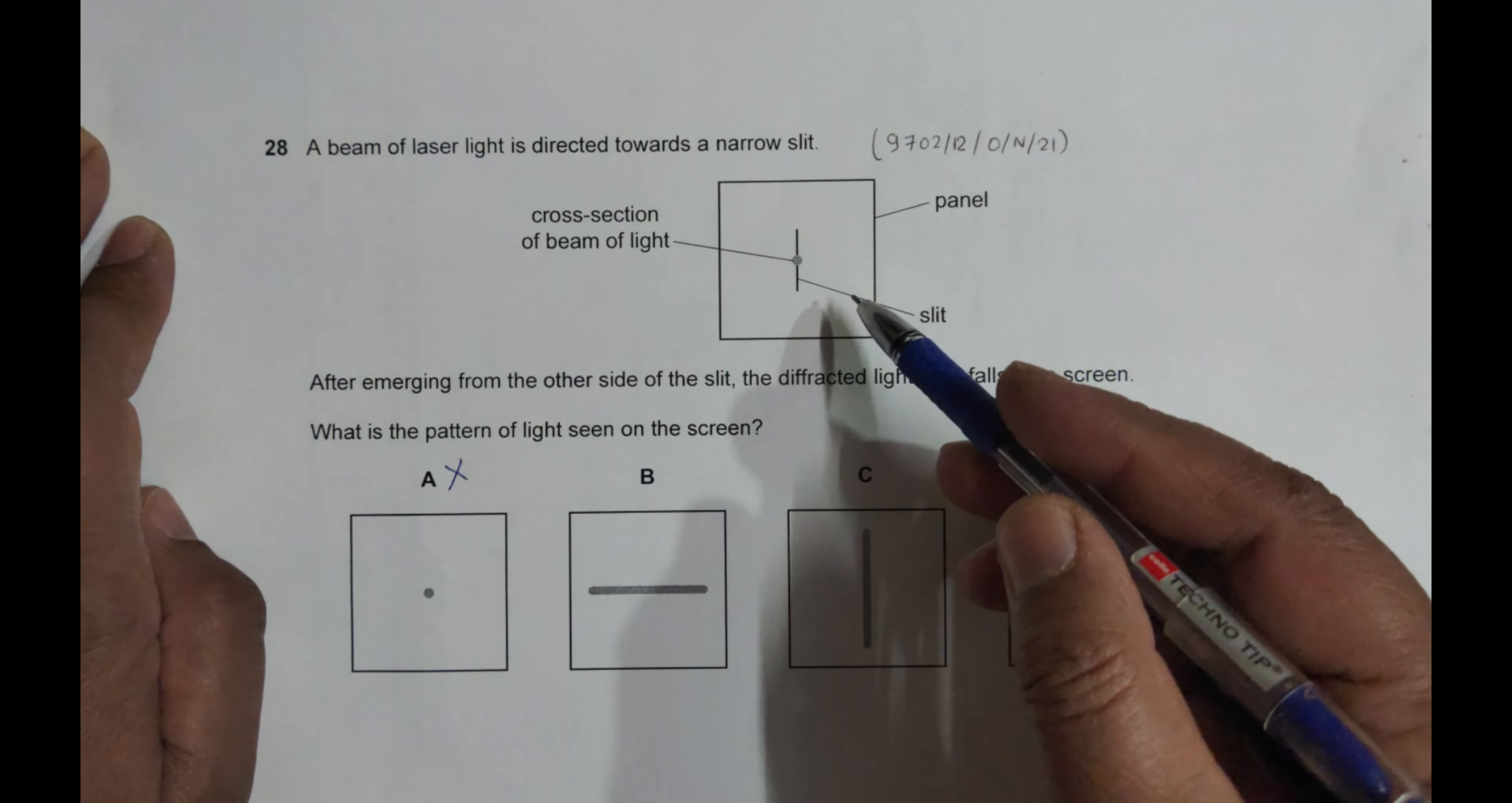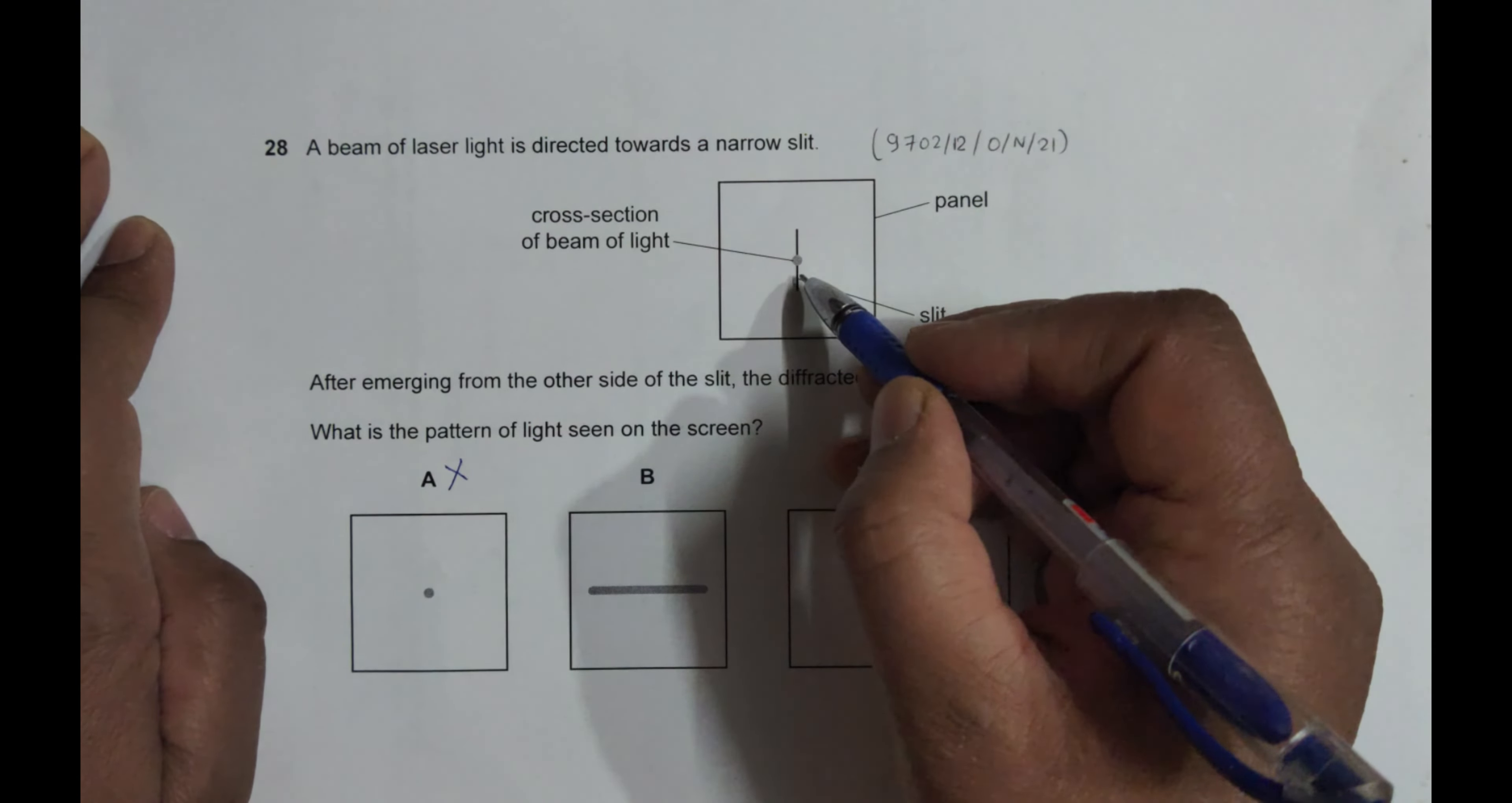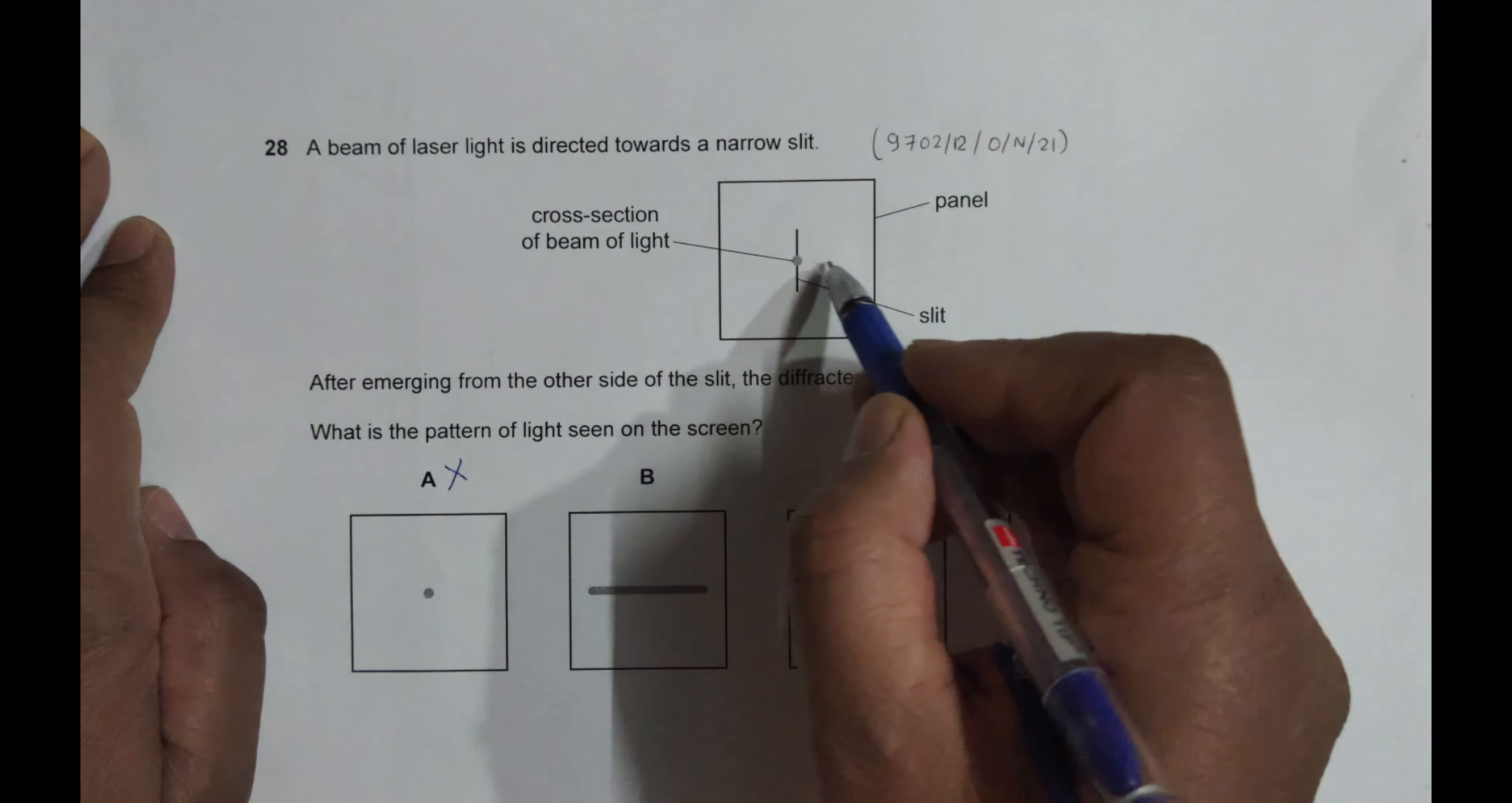So with that theory in mind, choice number B seems to be correct. It's because the width of the slit is very, very narrow compared to the length. And the diffraction occurs in the direction of the width.